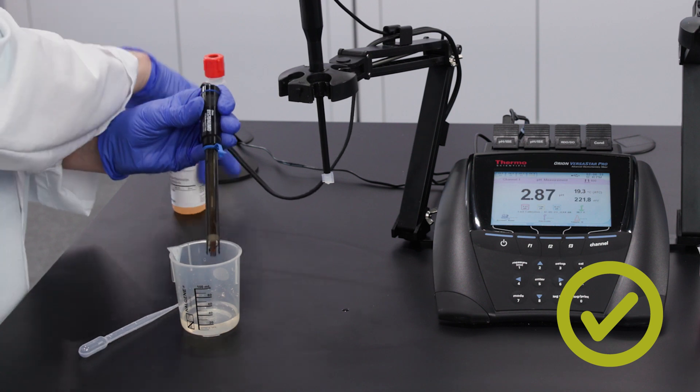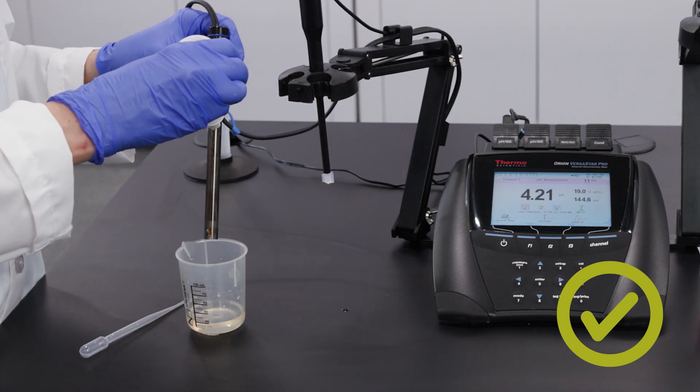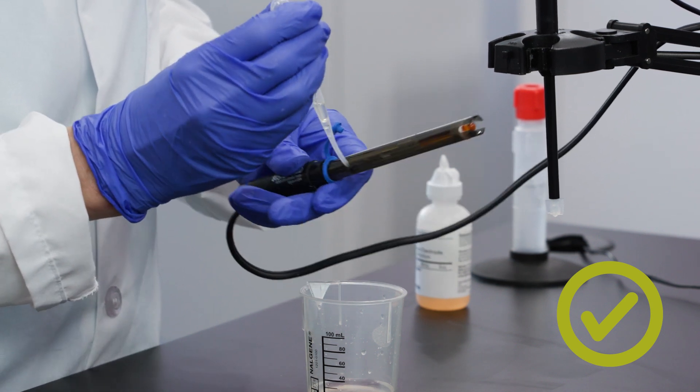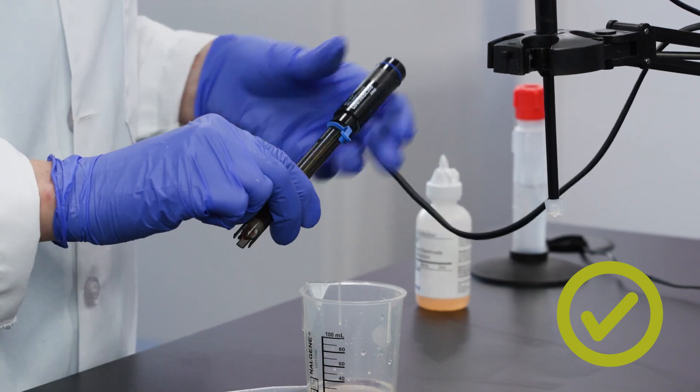To prevent this, open the fill hole during testing, top up the fill solution, and change out the electrolyte fill solution, draining and refilling it every two weeks. Depending on our application, we may have to replace or refill the fill solution more or less frequently.